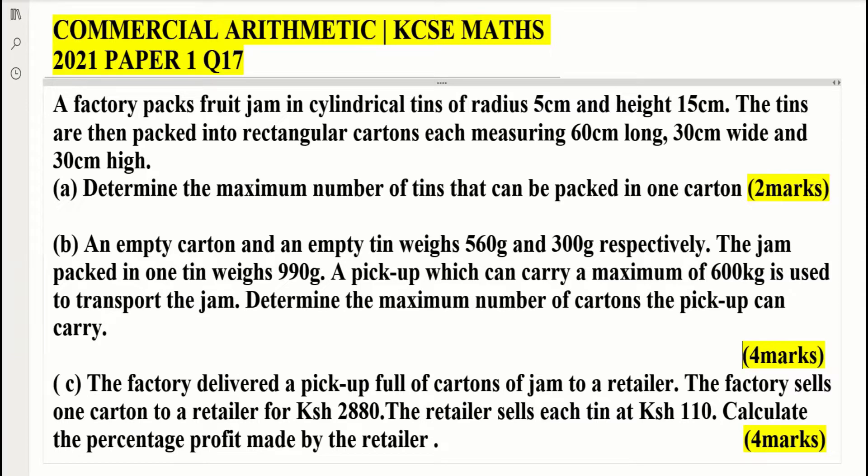A factory packs fruit jam in cylindrical tins of radius 5 cm and height 15 cm. The tins are then packed into rectangular cartons each measuring 60 cm long, 30 cm wide and 30 cm high. Determine the maximum number of tins that can be packed in one carton.